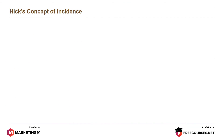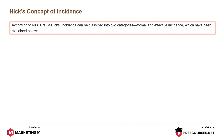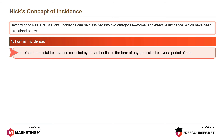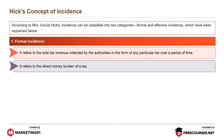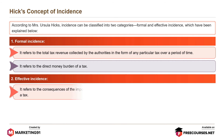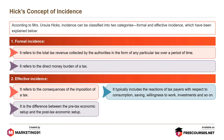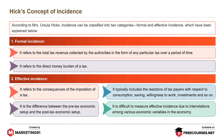Moving on to Hicks' concept of incidence. According to Mrs. Ursula Hicks, incidence can be classified into two categories: formal and effective incidence. Formal incidence refers to the total tax revenue collected by the authorities in the form of any particular tax over a period of time; it refers to the direct money burden of a tax. Effective incidence refers to the consequences of the imposition of a tax. It is the difference between the pre-tax economic setup and the post-tax economic setup. It typically includes the reactions of taxpayers with respect to consumption, saving, willingness to work, investments, and so on. It is difficult to measure effective incidence due to interrelations among various economic variables in the economy.